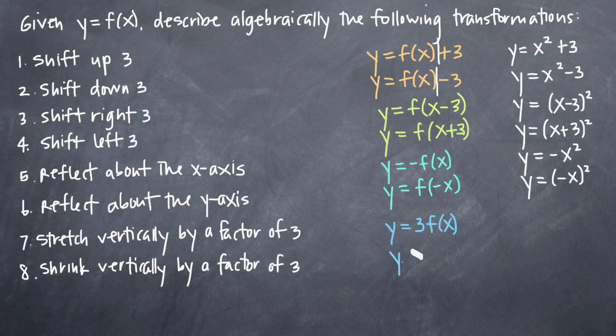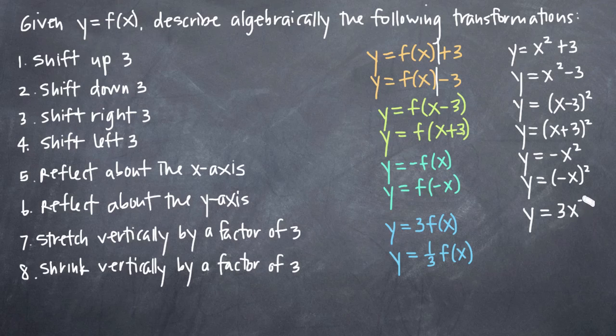If we shrink vertically, we want to say y equals 1 third f of x and every y coordinate that was on our original graph will now be 1 third what it was originally. What that looks like here of course is y equals 3x squared and y equals 1 third x squared.